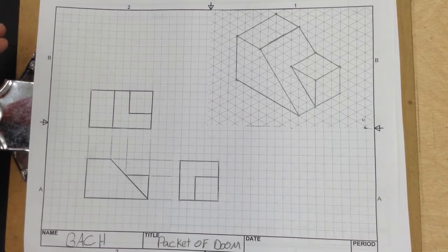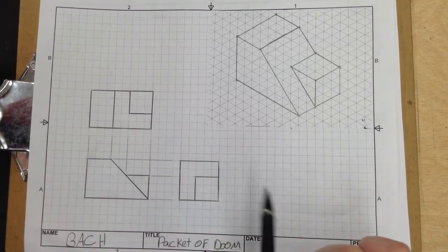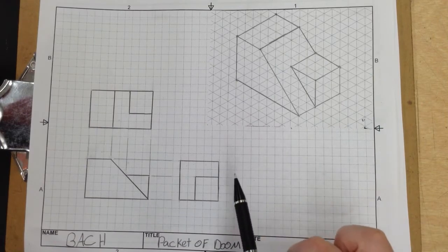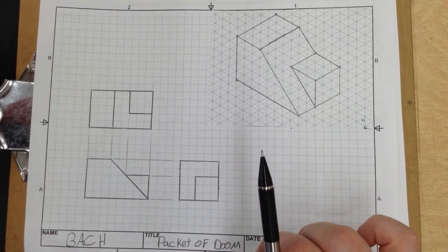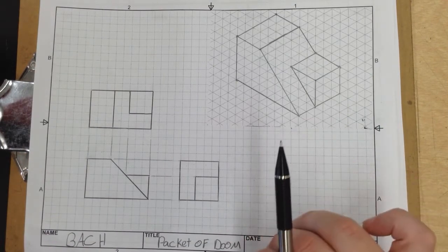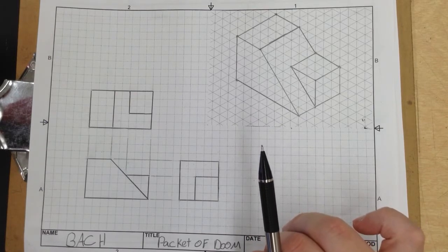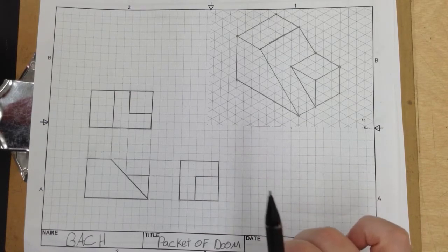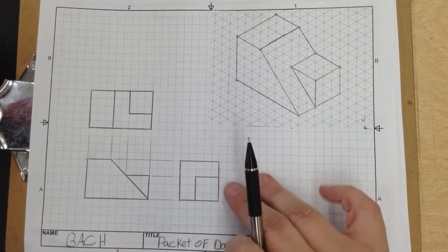We are going to go ahead and do a little bit of work on isometric and multi-view drawing with this particular shape. So if you need to just compare it to your drawing, go ahead and stop the video right now and just compare. If you need to see it step by step, go ahead and watch the rest of the video. So let's go ahead and get started.